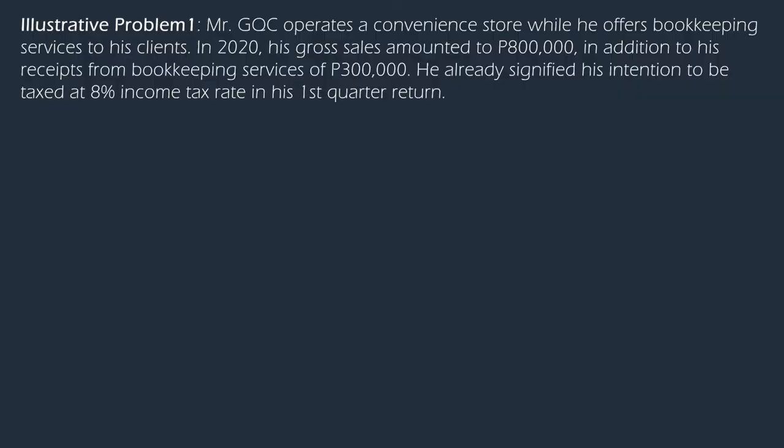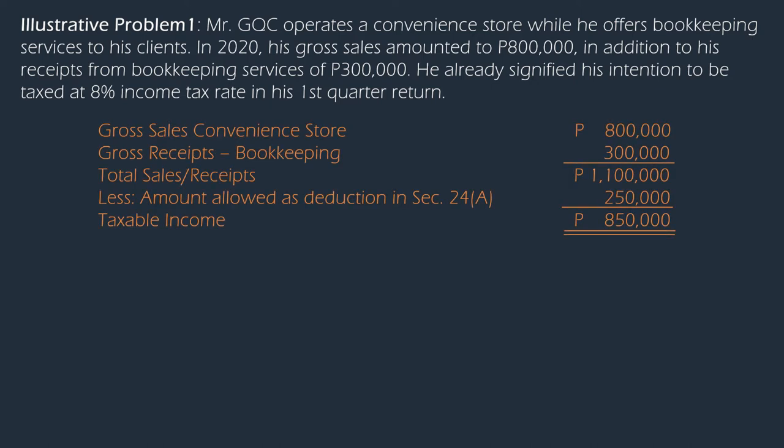For our first illustrative problem, the taxpayer operates a convenience store while he offers bookkeeping services to his clients. In 2020, his gross sales amounted to $800,000 in addition to receipts from bookkeeping services of $300,000. He already signified his intention to be taxed at 8% income tax rate in his first quarter. Notice that the combined amounts of gross sales and gross receipts did not reach the $3 million VAT threshold. The taxpayer is a pure business income earner, therefore could avail of the deduction of $250,000 per Section 24A of the tax code as amended. Based on the 8% option, the income tax shall be based on combined amounts of gross sales and gross receipts.